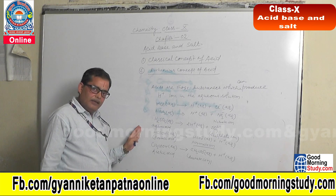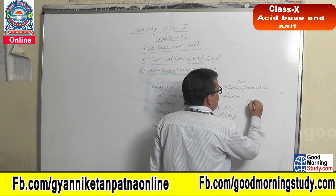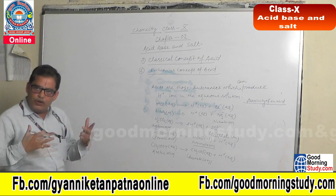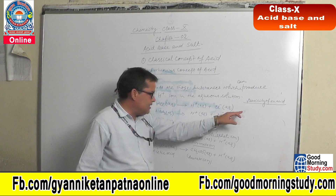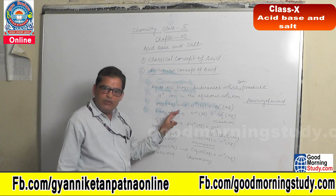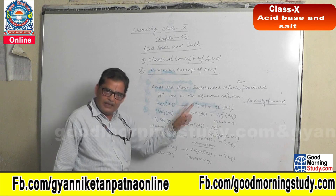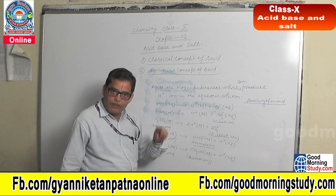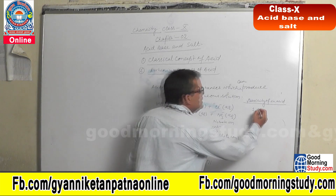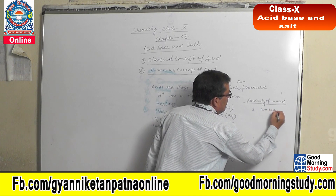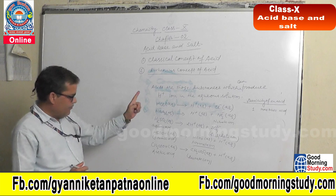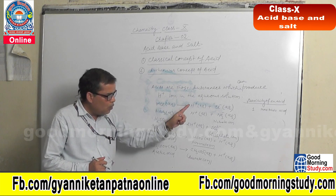Now there is one more thing you have to keep in mind. In the case of acid, one term is used: basicity of an acid. What do you mean by basicity of an acid? Basicity of an acid depends upon the number of replaceable H+ ions in the aqueous solution. Whatever H+ ions are produced in the aqueous solution, that will be the basicity of that acid. For example, hydrogen chloride produces one H+, that is why its basicity is one, and it is known as a monobasic acid. If asked for an example of monobasic acid, that will be HCl.